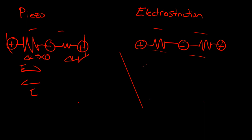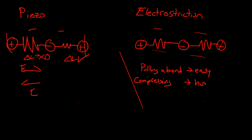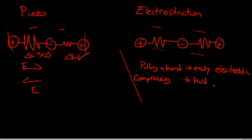We have to know that pulling on a bond is easier, while compressing a bond is hard. This is because when you're pulling on it, you're working against electrostatic forces. But when you're pushing on it, eventually when the atoms get closer and closer together, there's quantum mechanical effects — some quantum stuff going on there. And thus it becomes really hard to compress.